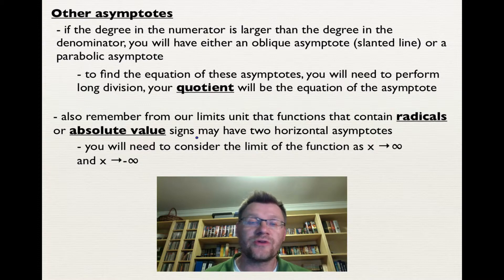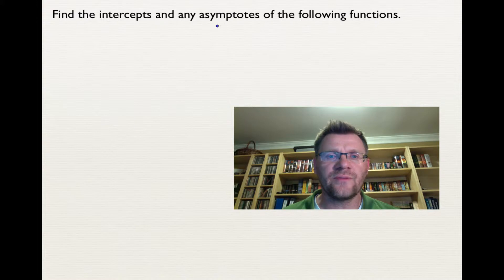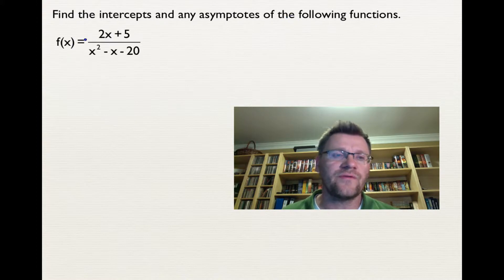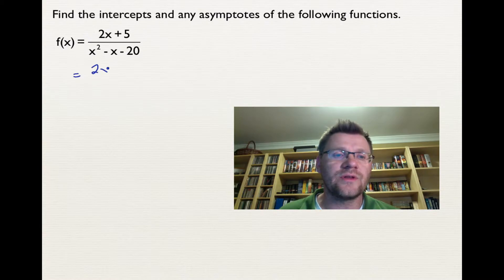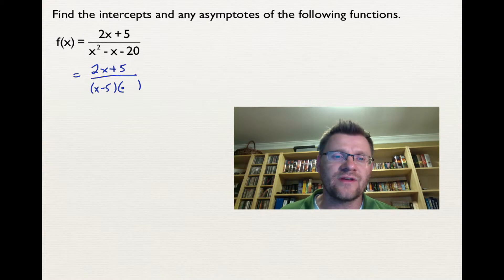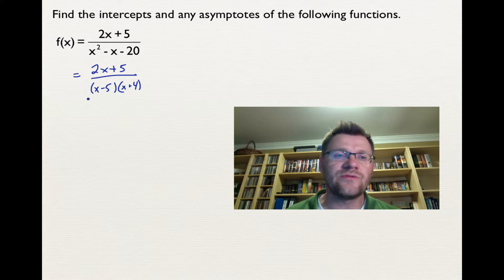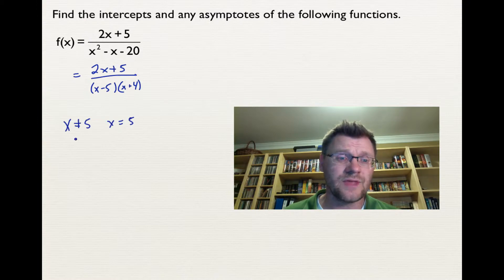Let's find the intercepts and asymptotes of our first function: f(x) = (2x + 5) / (x² - x - 20). The first thing to do is factor the denominator. Two things that multiply to negative 20 and add to negative 1 give us (x - 5)(x + 4). Looking at asymptotes first: x cannot equal 5, so there's a vertical asymptote at x = 5, and x cannot equal negative 4, giving a vertical asymptote at x = -4. Those are our non-permissible values from the denominator.